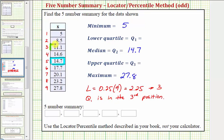So looking at our data set, notice how 11.1 is in the third position, which is Q1. 11.1 would be the median of the lower half of the data if we included the median of 14.7 in the lower half. So Q1 is 11.1.